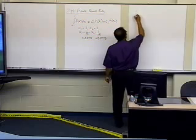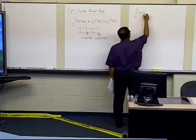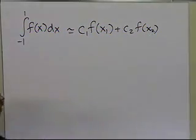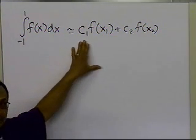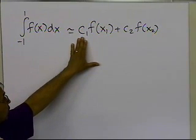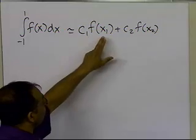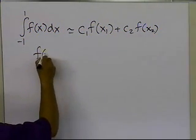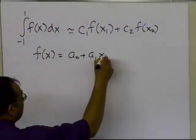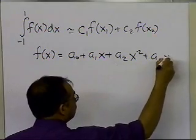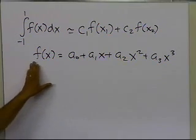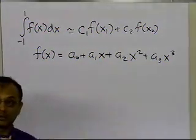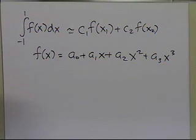We have the integral from minus 1 to plus 1, approximated as c1 times f(x1) plus c2 times f(x2). We want this formula to give exactly the same result as the integral of a third-order polynomial, because we have four choices — four unknowns — to find: c1, c2, x1, and x2. So I choose f(x) equal to a0 plus a1*x plus a2*x² plus a3*x³.